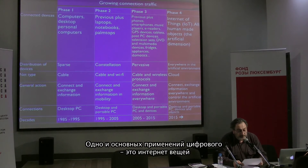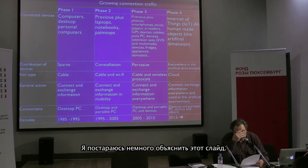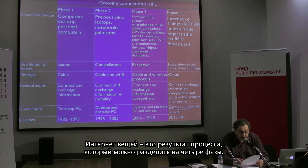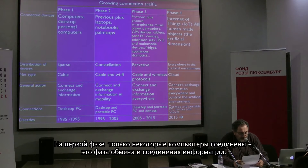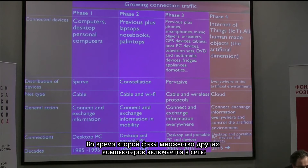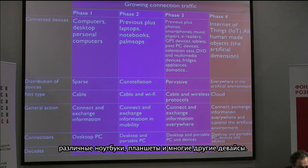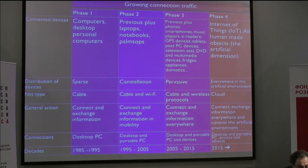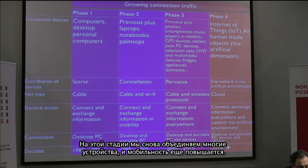One of the main applications of the digital is the Internet of Things. The Internet of Things is the result of a process that can be resumed in four phases. In the first phase, only some sparse desktop computers and PCs are connected — this is the phase of connecting and exchanging information. In the second phase, mobile computers are added: laptops, notebooks, and a wider typology of connected devices and wireless networks are added, allowing exchange of information in mobility.